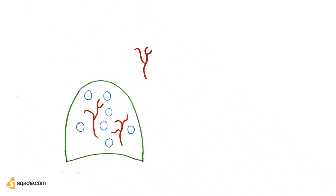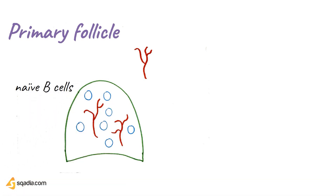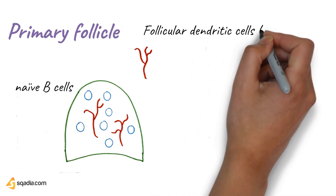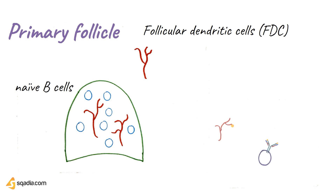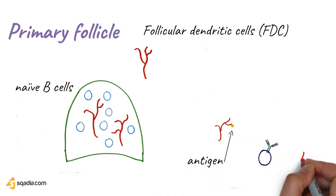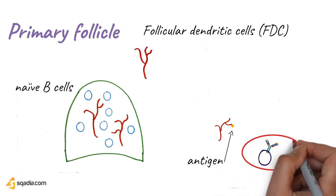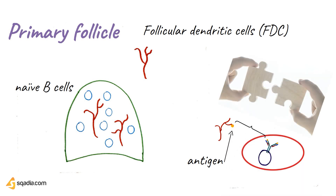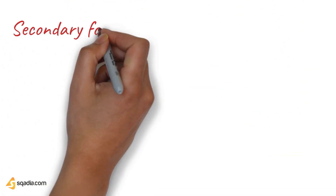This is the primary follicle. The small blue cells are the naive B cells, while the red bizarre-shaped cells are called follicular dendritic cells, or FDCs for short. Antigens — like this yellow dot — are caught by dendritic cells and presented to the B cells. The purpose of the germinal center reaction is to create B cells capable of producing perfectly matching antibodies to these antigens.